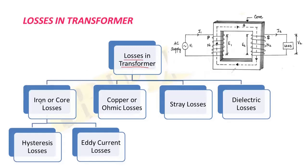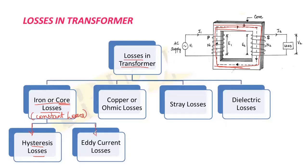The very first loss is called the iron or core losses. This loss takes place in the core of the transformer, and the losses which take place in this part are called core or iron losses. They are also called constant losses, as these losses do not depend upon the current. Further, iron or core losses are divided into two parts: one is called hysteresis loss and the other is called eddy current loss.